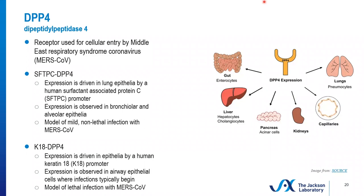The Jackson Laboratory also has a couple of strains that are mutants for the DPP4 receptor. This receptor is used for entry by the Middle East Respiratory Syndrome Coronavirus, or MERS-CoV. One of the strains, SPC-DPP4, is a model of mild or nonlethal infection of MERS-CoV. Expression is driven in the lung epithelia by the human surfactant-associated protein C promoter and is also observed in the bronchioles and alveolar epithelia. K18-DPP4, on the other hand, is a model of lethal infection with MERS-CoV. Expression is driven by the K18 promoter, and expression is observed in the airway epithelial cells, which is where infections usually begin. Since the viruses in the coronavirus family share aspects of their biology, this might be a good receptor to keep an eye on — not just for SARS-CoV, but potentially even for SARS-CoV-2, as well as other novel coronaviruses that might emerge in the future.